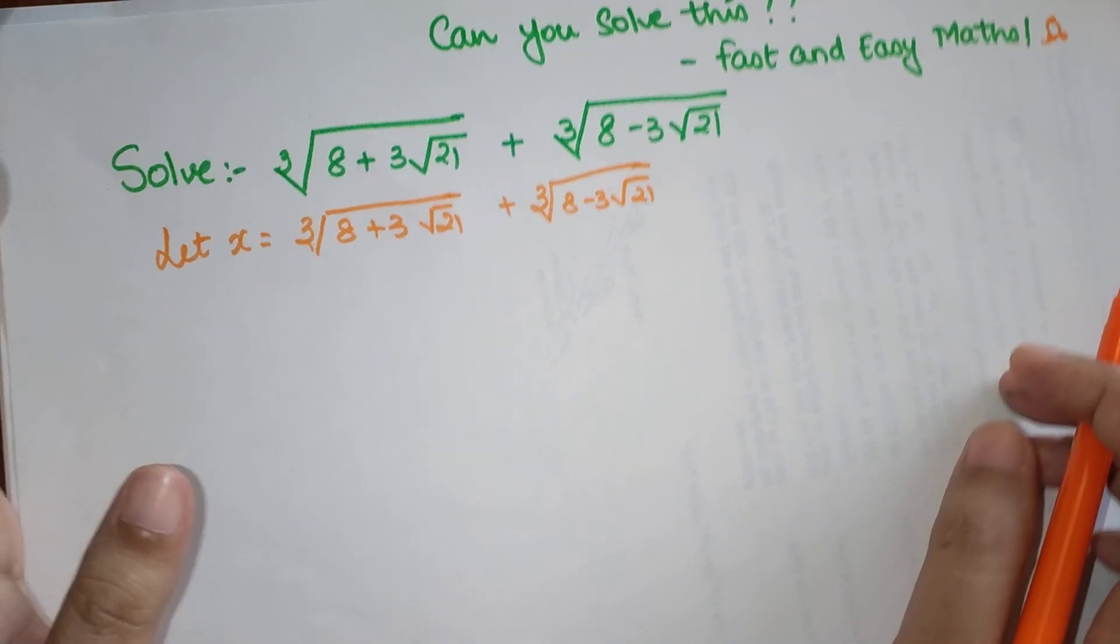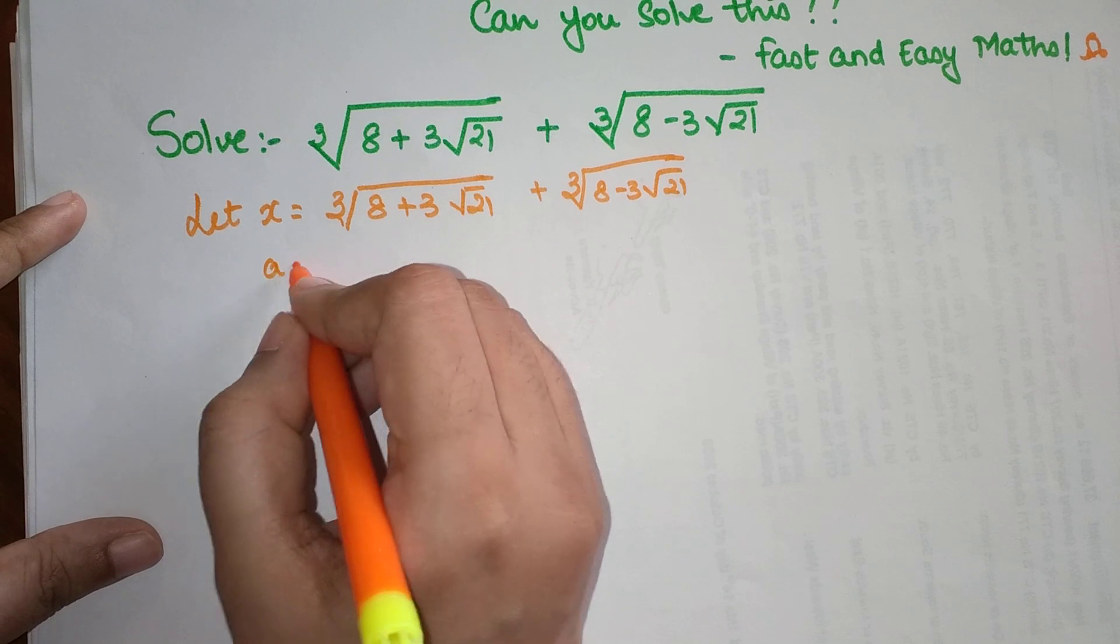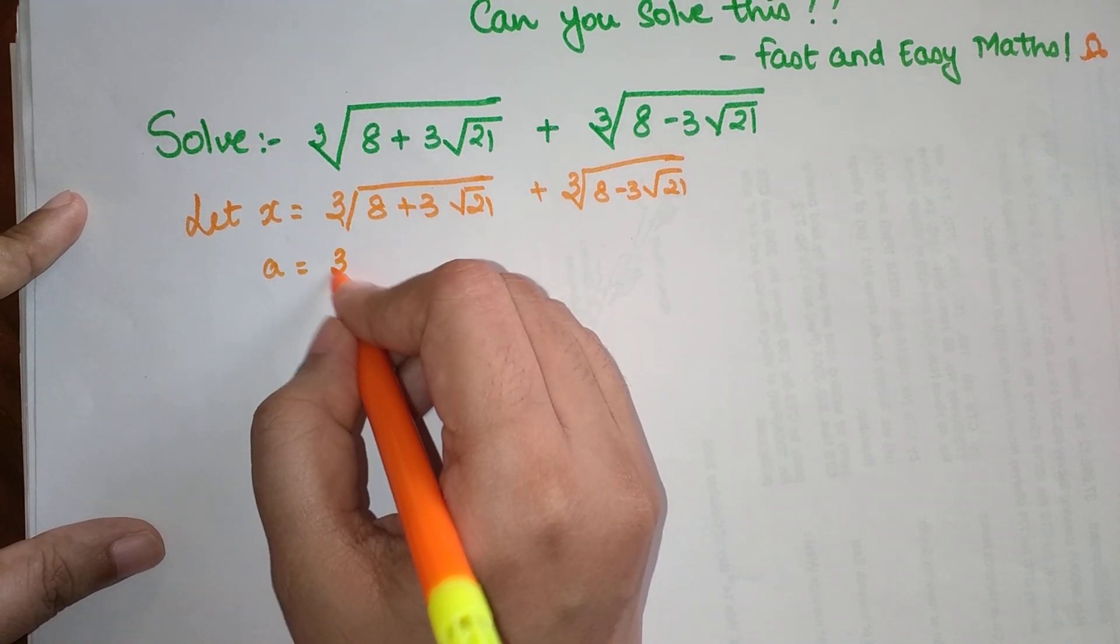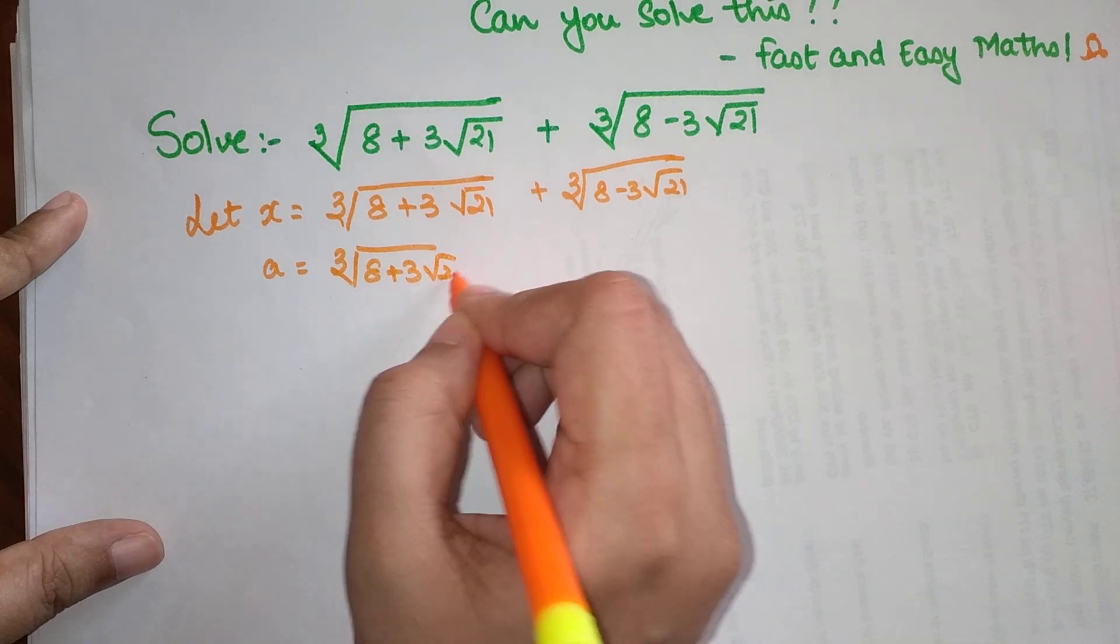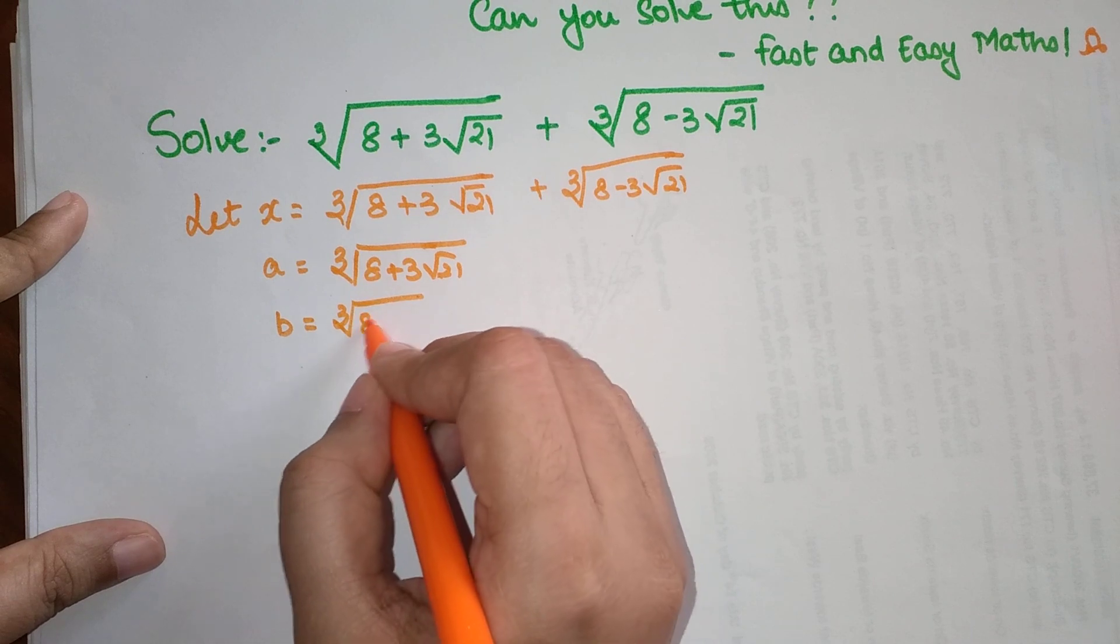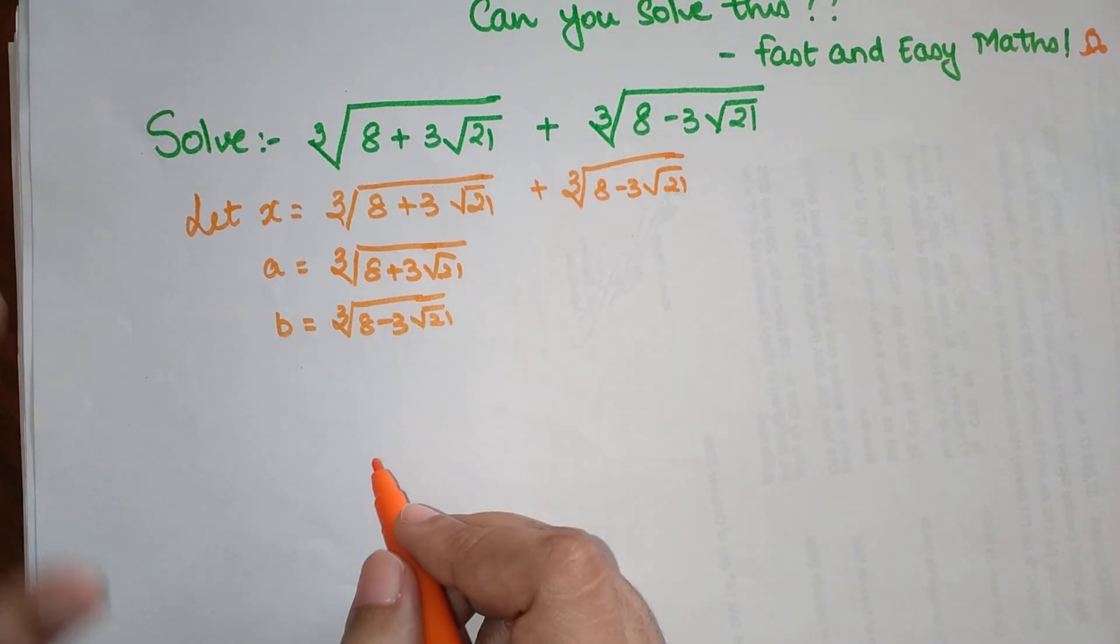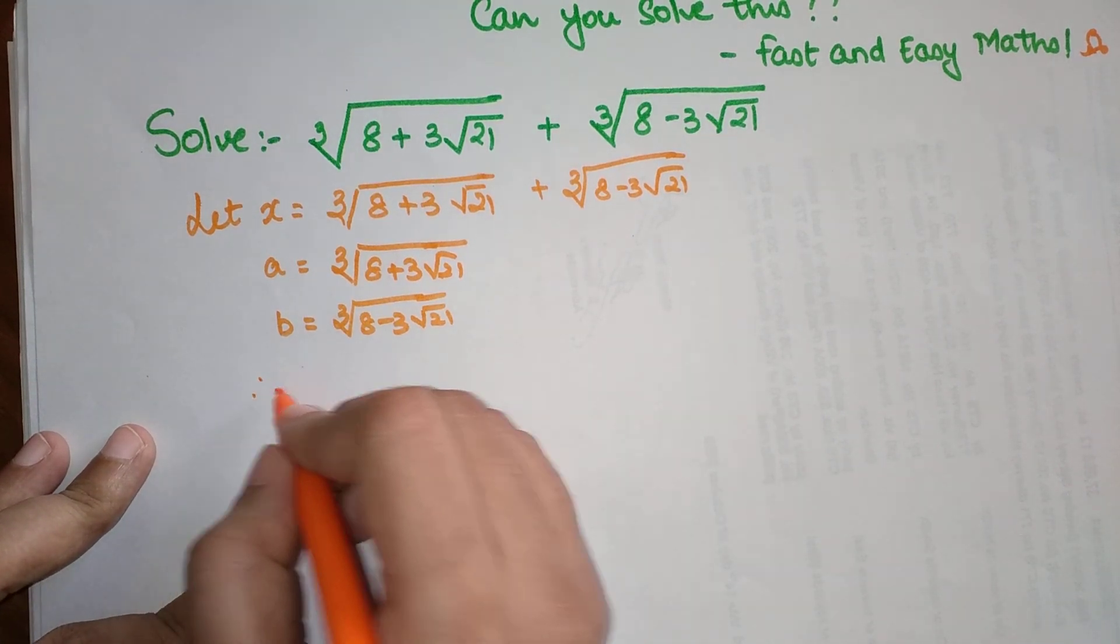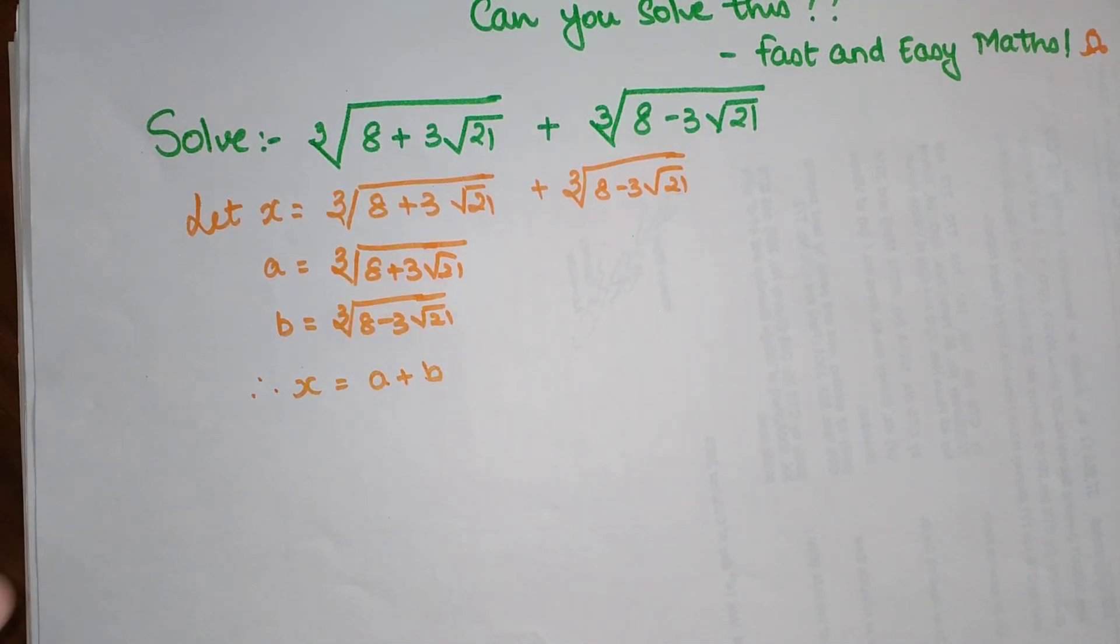The thing is that these two terms are also looking quite big to actually solve further, so I'm just going to assign variables to that as well. So a equals cube root of 8 plus 3 root 21 and b equals cube root of 8 minus 3 root 21.